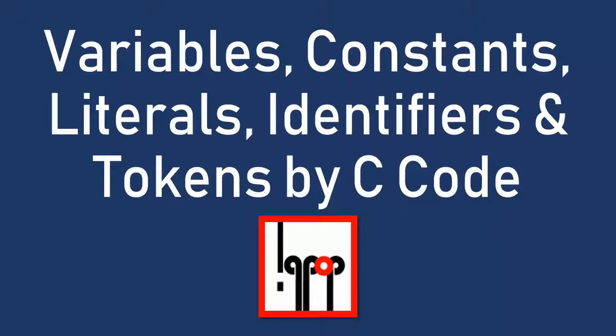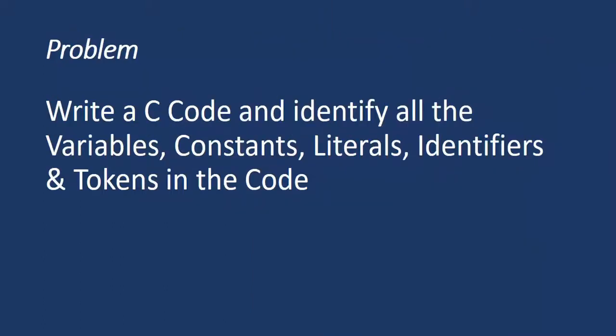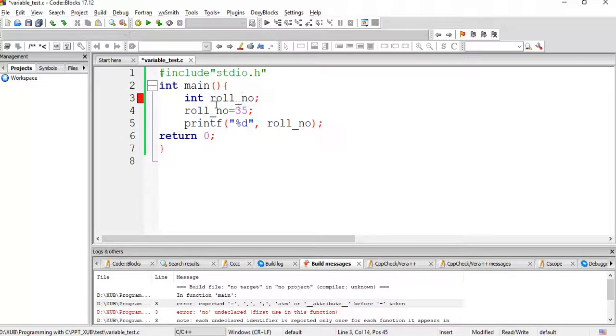Hello all, welcome to IQ Pop. In our previous lecture we discussed variables, constants, literals, identifiers, and tokens in C. Now in this lecture we will check them out using some C code — we'll write a C code and identify all the variables, constants, literals, identifiers, and tokens in the code.